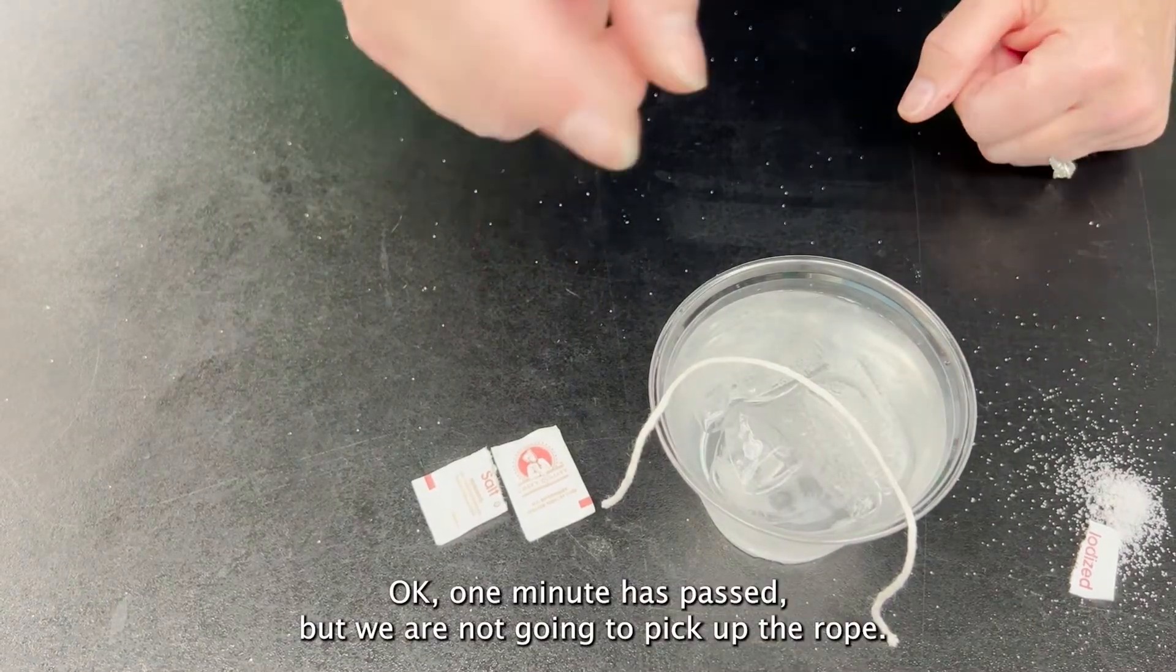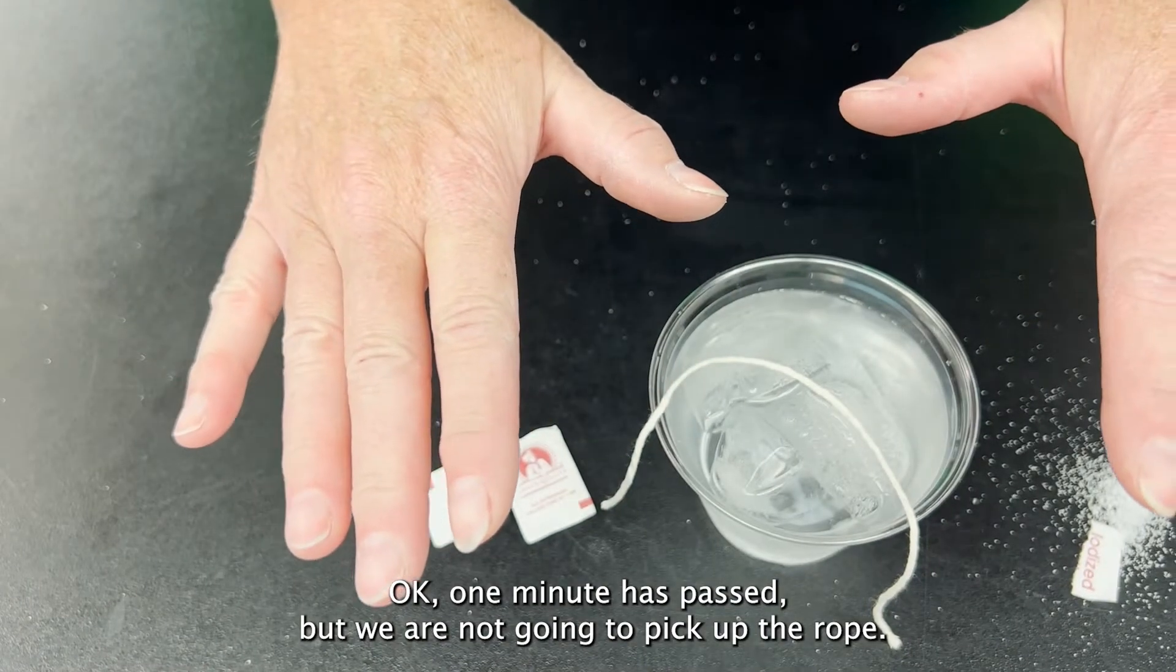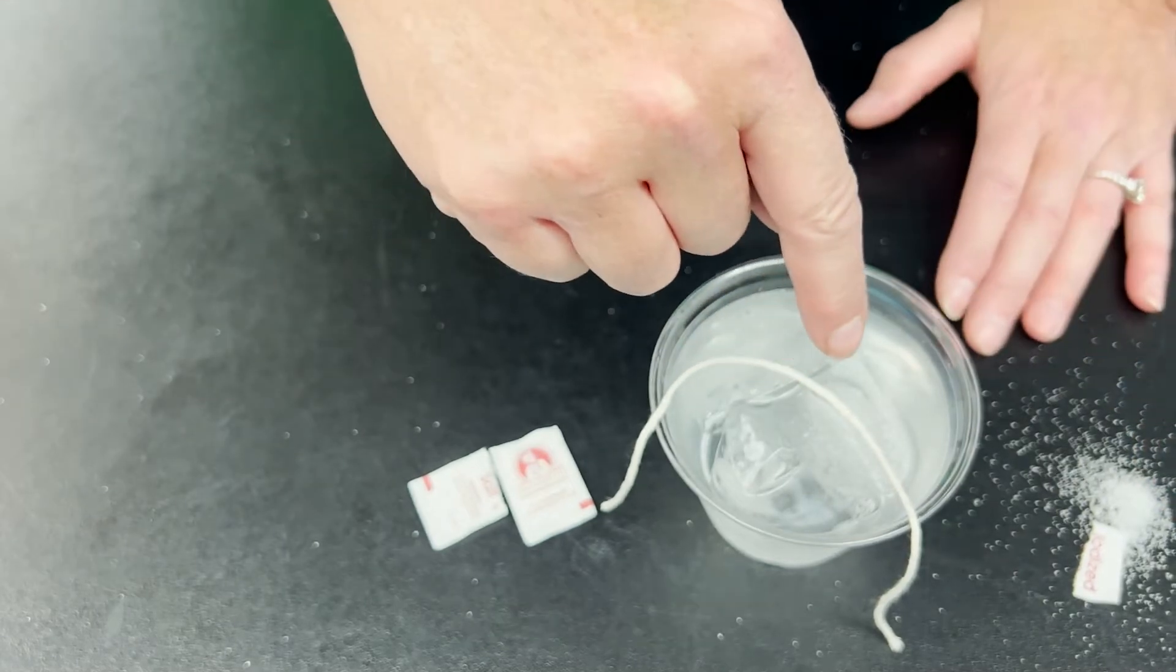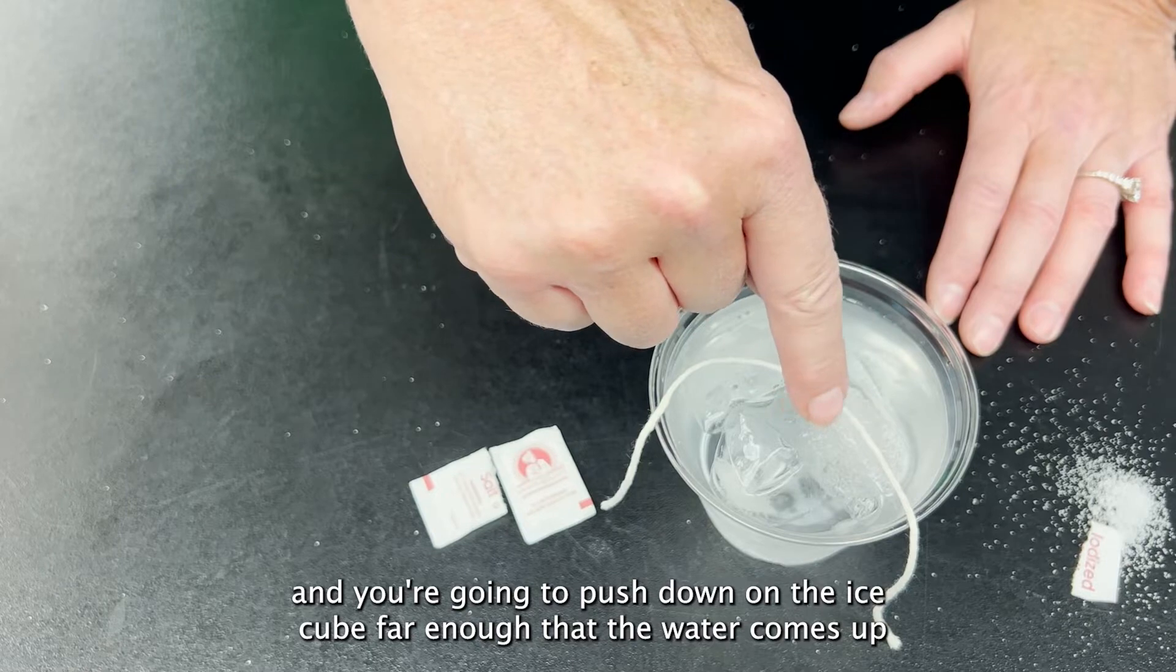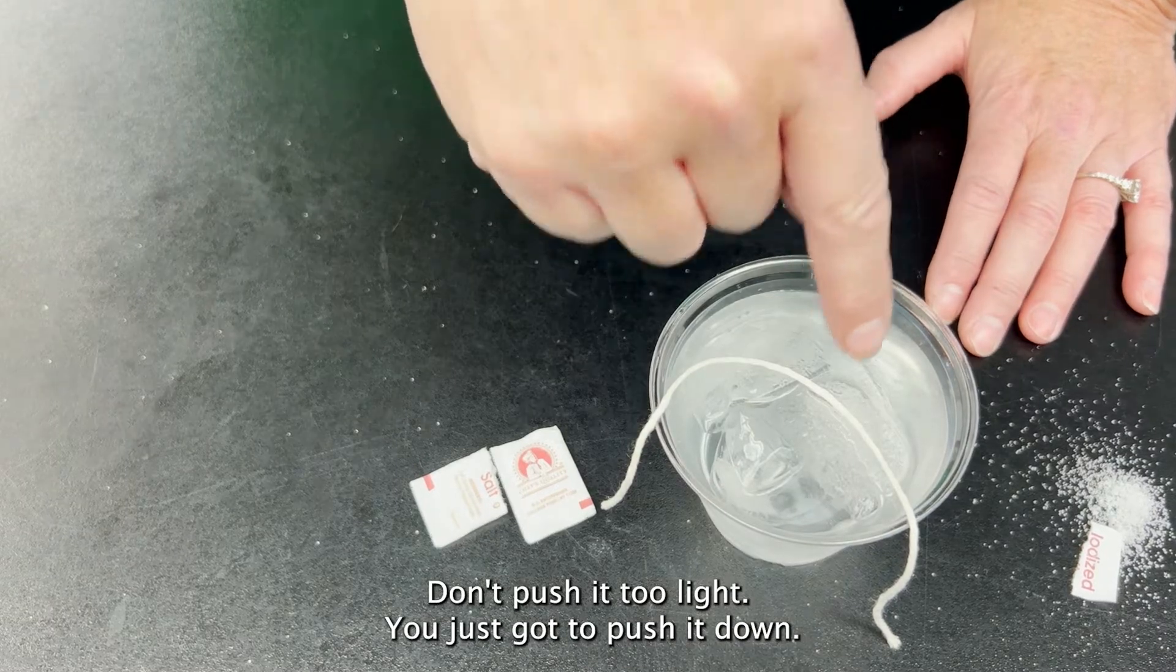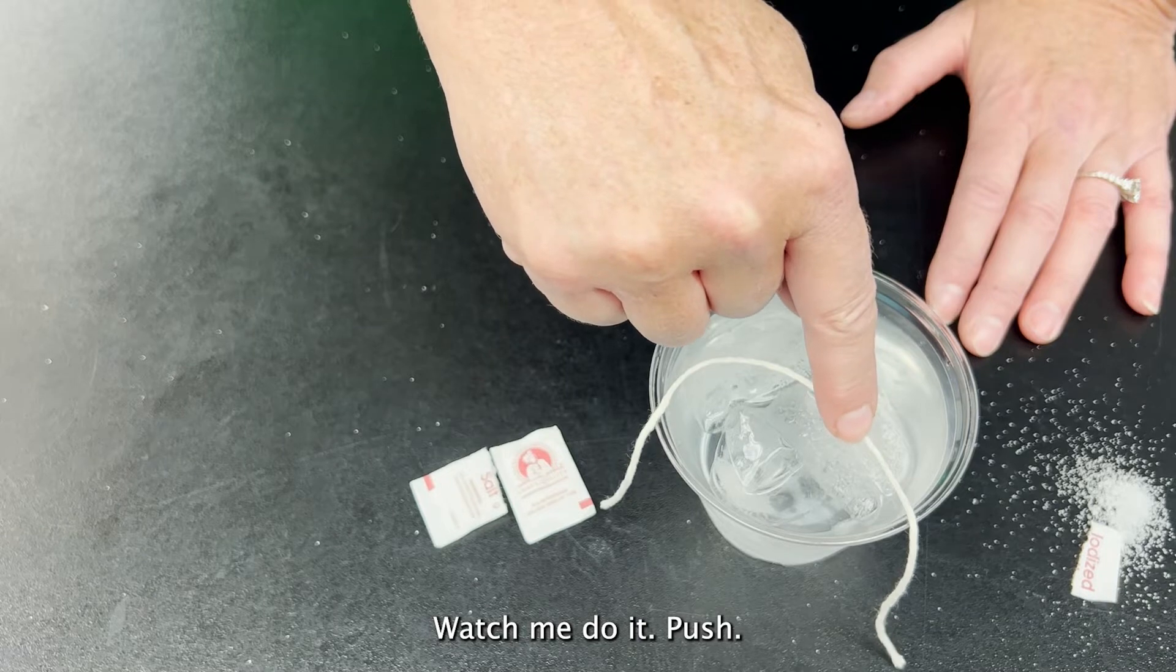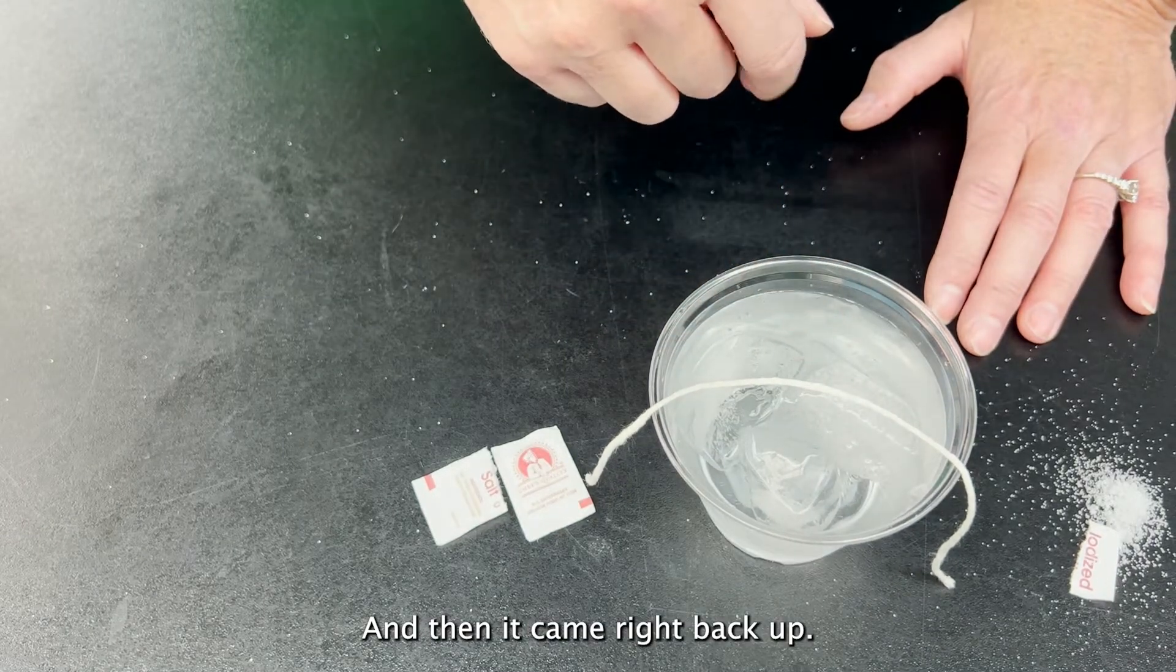Okay, one minute has passed, but we are not going to pick up the rope. You're going to take one finger and one finger only, and you're going to push down on the ice cube far enough that the water comes up and touches the string, and then you're going to let go. Don't push it way down. Don't push it too light. You just got to push it down. Watch me do it. Push, and then it came right back up.